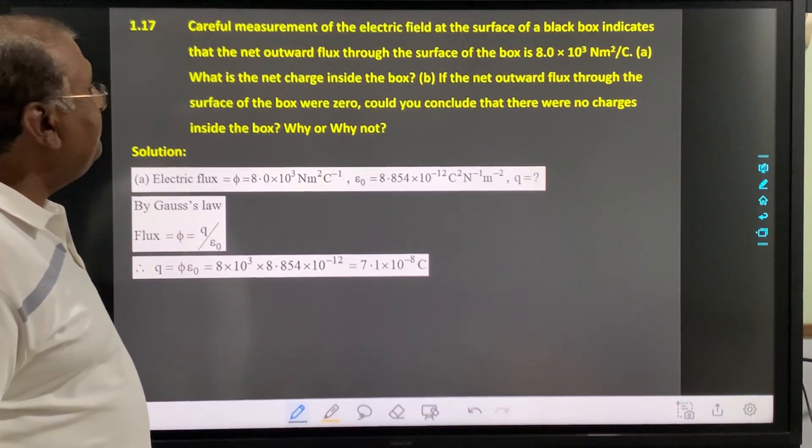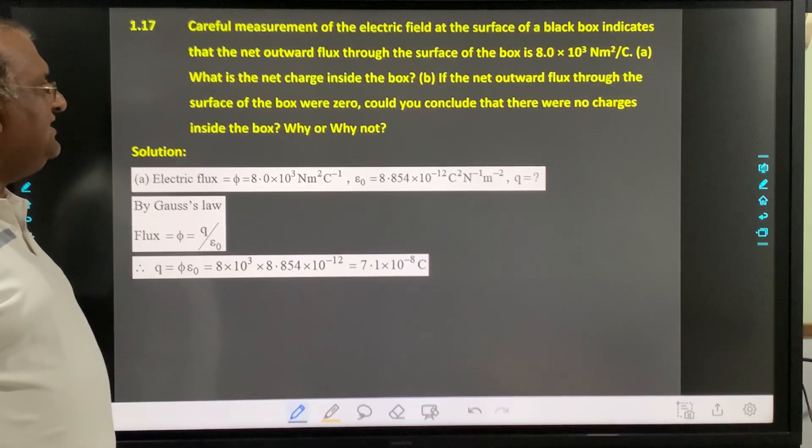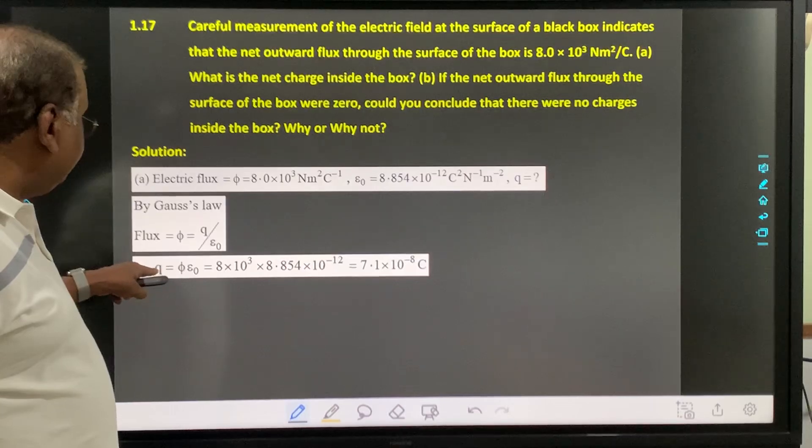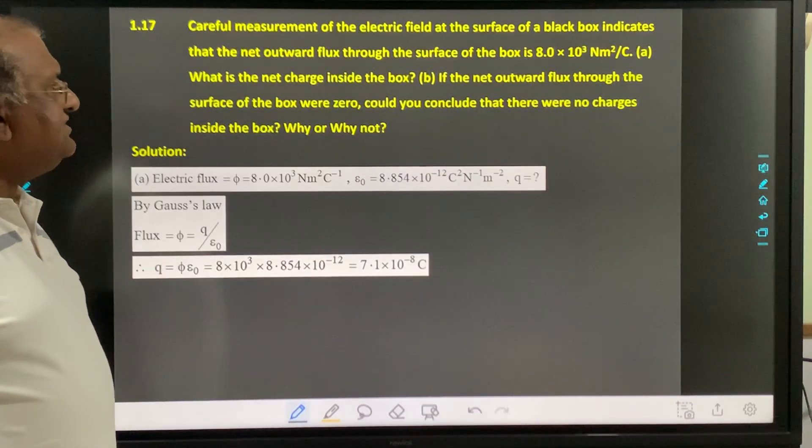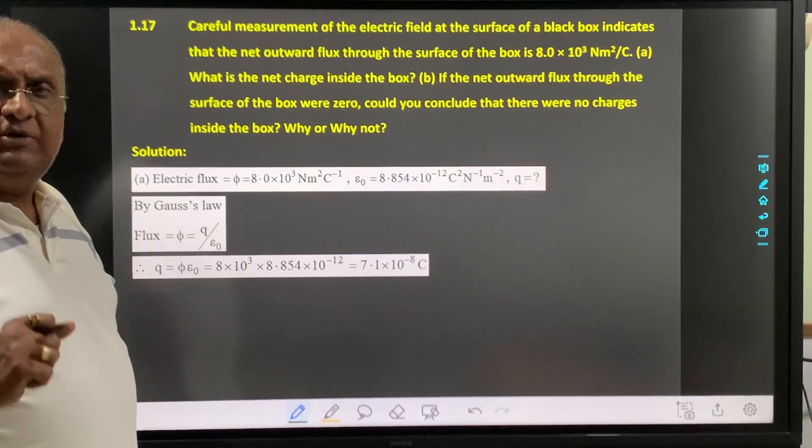Now question B: If the net outward flux through the surface of the box were zero, the net charge enclosed by the surface would be zero.